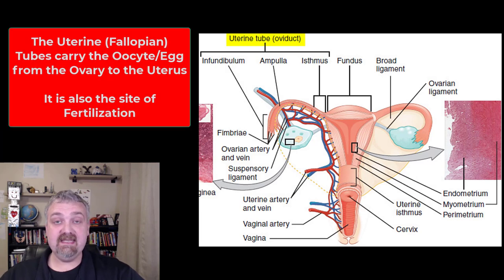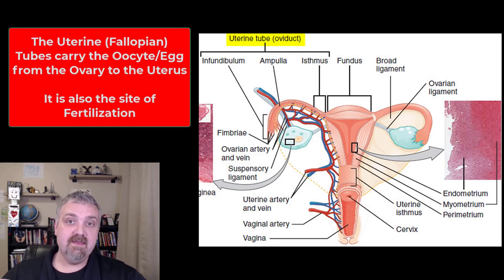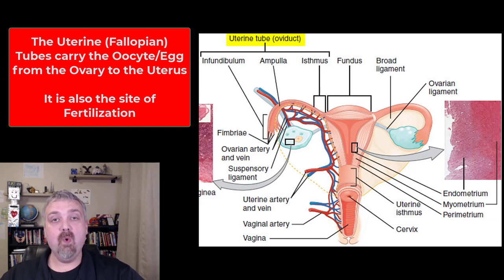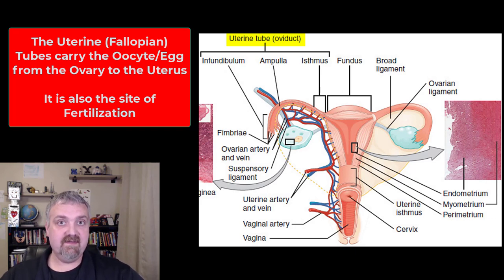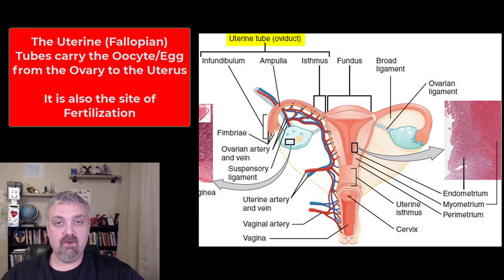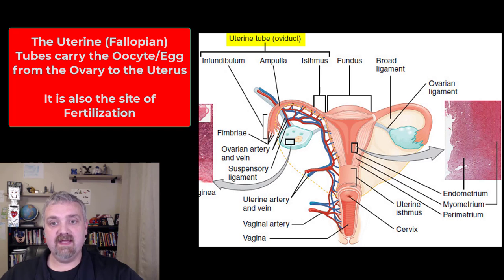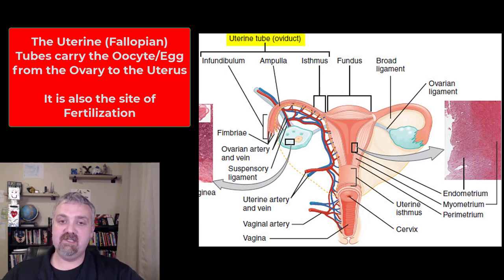The job of the uterine tube is to take the oocyte that has come from the follicle released by the ovary and transport it to the uterus. So if that oocyte is fertilized and becomes a zygote, it will take care of the zygote as it divides into 2 cells, then 4, then 8, on the way to the uterus for implantation.